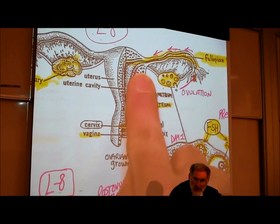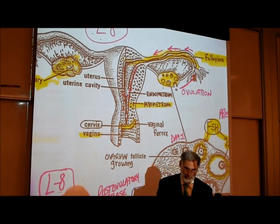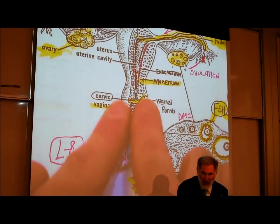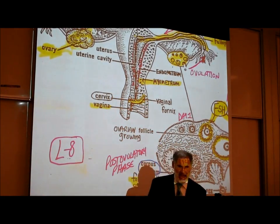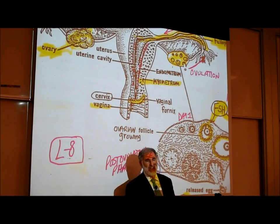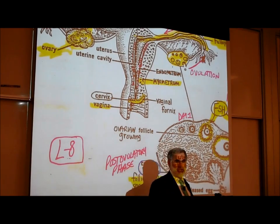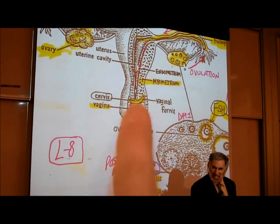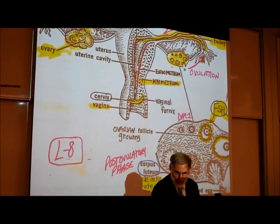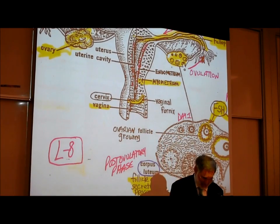The thick outer wall is labeled the myometrium — that's the muscular wall, 'myo' means muscle. The bottom of the uterus opens to the vaginal canal and is called the cervix. The cervix dilates or widens during childbirth, and the cervix is one of the more common places where cancer may occur in women.